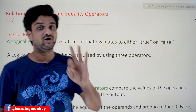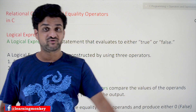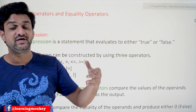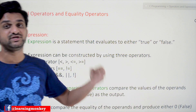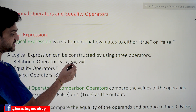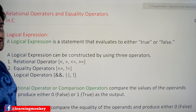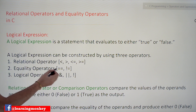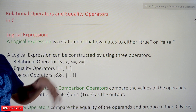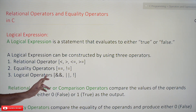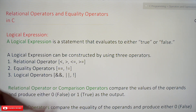Logical expressions can be constructed using three different types of operators. First, relational operators: less than, greater than, less than or equal to, greater than or equal to — also called comparison operators. Second, equality operators: equal to and not equal to. Third, logical operators: logical AND, logical OR, and logical NOT. In this class we'll cover relational and equality operators.